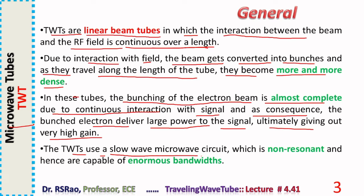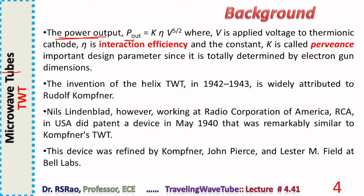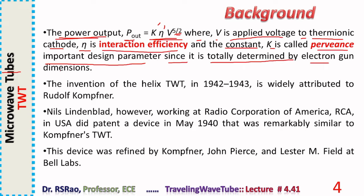TWTs use a slow wave circuit that is non-resonant, hence capable of enormous bandwidth. The power output P_out of the device can be expressed as K·η·V^(5/2), where V is the applied voltage to the thermionic cathode, η is interaction efficiency, and K is pervience — an important design parameter determined entirely by the electron gun dimensions.